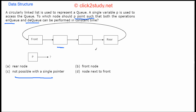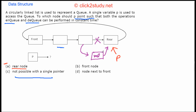Suppose P points to the rear node. If we insert a new node, we need to make the previous node's pointer go to the new node, and the new node should then point to rear. To do that, we need to traverse the list to find the node just before rear.